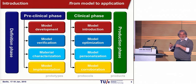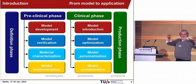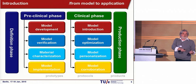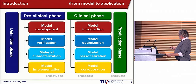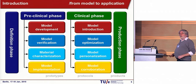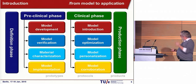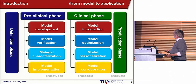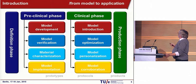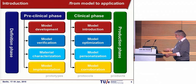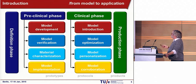Then you have to personalize the model — feed it with the input of the specific patient, not a group of patients, but the specific patient. For that you have to know which parameters are important and which are not, so you do sensitivity and uncertainty analysis. And in the end you have to corroborate your model and show that indeed the model and the decision support related to it helps the patient. And then you can maybe go to a phase where you make a product and sell it, but that's for later. During my talk I will go through a few of these blocks.